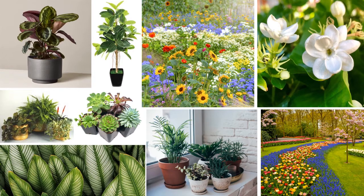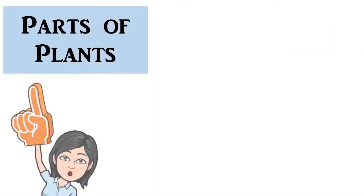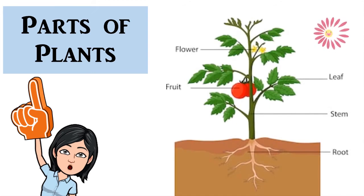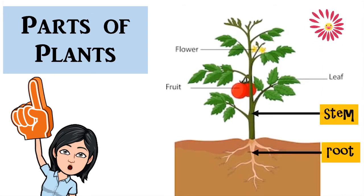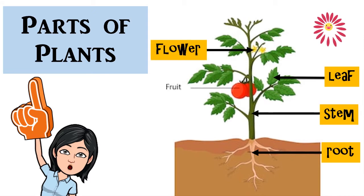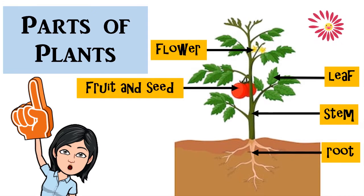What are their functions? These are the main parts of plants. We have the root, stem, leaf, flower, fruit, and seed.